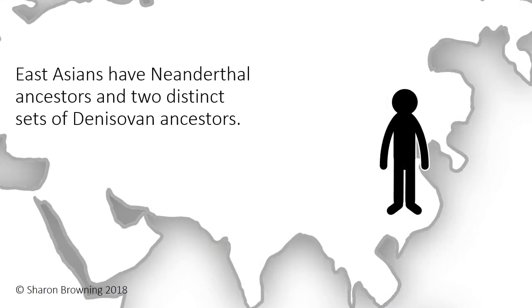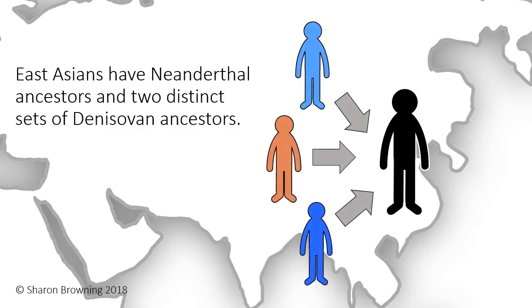So now we know a bit more about the ancestral origins of current-day humans. If your ancestry is from East Asia, you have Neanderthal ancestors, and two distinct sets of Denisovan ancestors.